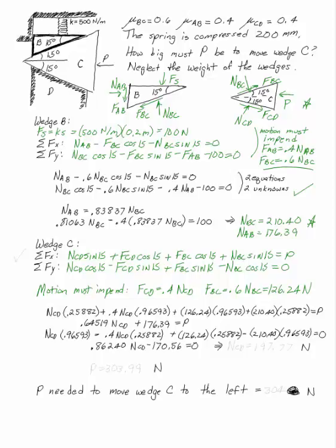If you plug all of the friction forces and all of the known values for your normal force at BC into the equations of equilibrium for wedge C, you can solve and you get NCD is 197.77. Substituting back in you get P is 303.99. So, P needed to move the wedge to the left is 304 pounds.